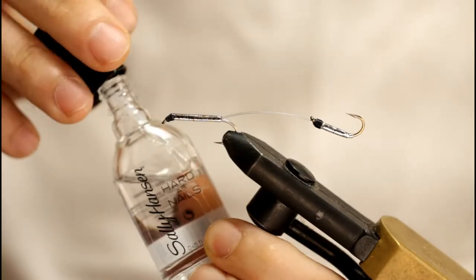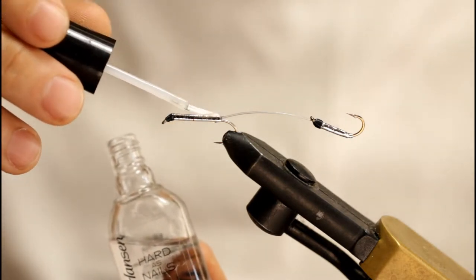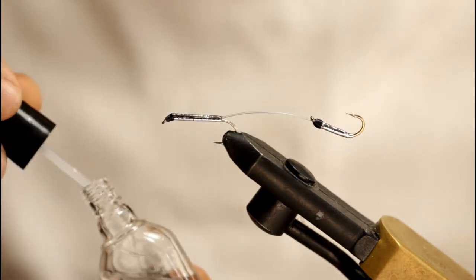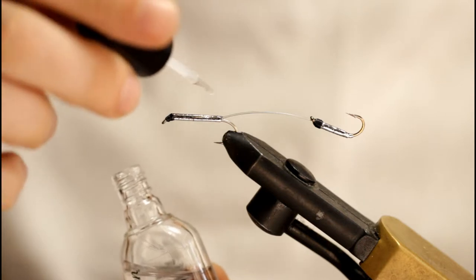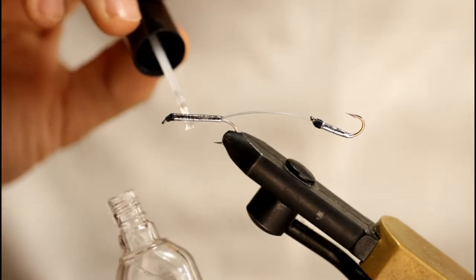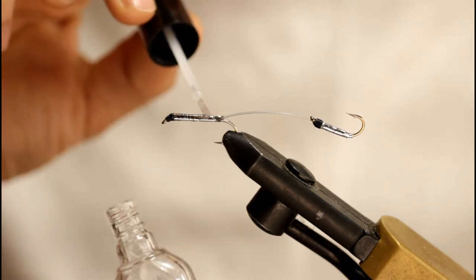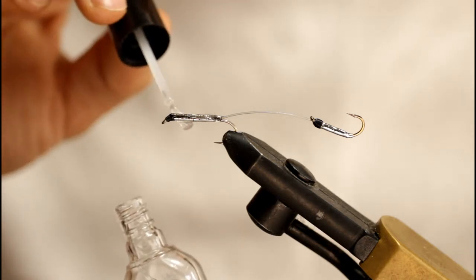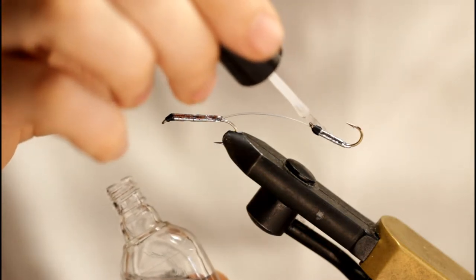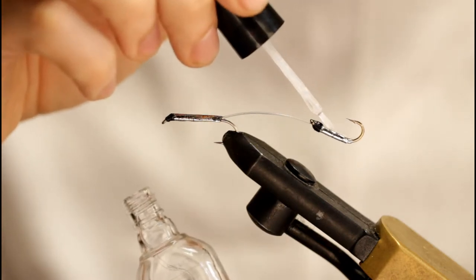All right, I've got my body finished. Now I'm going to apply some clear nail polish. This is going to secure the tinsel in place. If a big fish bites into it it won't come unraveled if you've got a couple coats of this. So I'll just put on one layer on the front and the back hook, let it dry, then I'll put on another layer. And once I get both layers on and dried, I'll move on to the next step here.